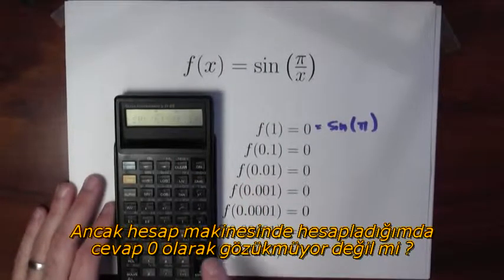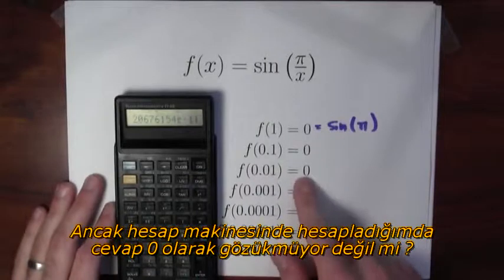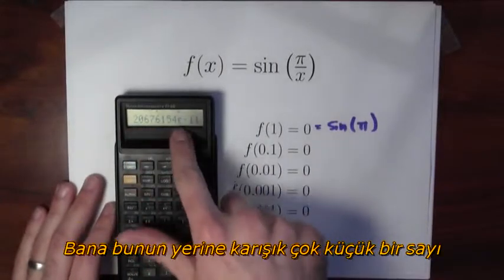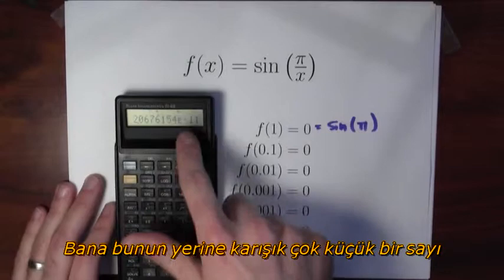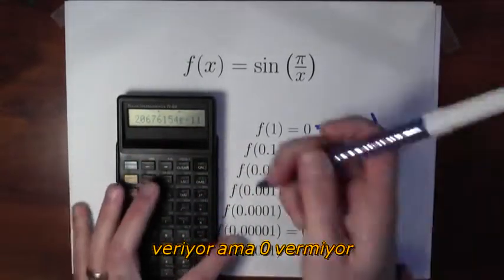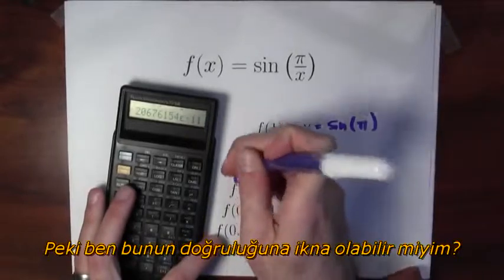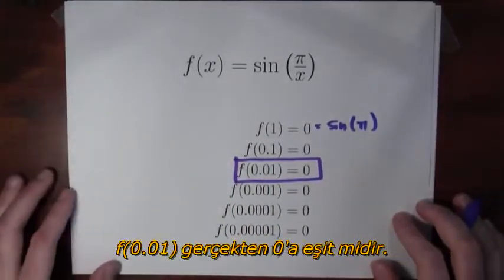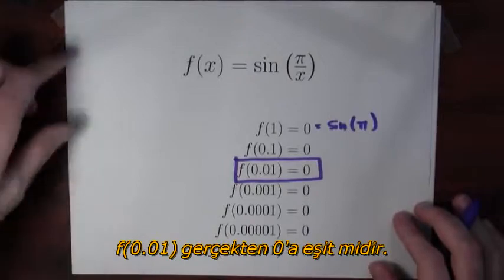If I ask my calculator to do this, it is not telling me the answer is 0. The calculator's giving me this, admittedly a very small number, E negative 11 here, but it's still not actually 0. So can I convince you that this is even true, that the function's value at 0.01 actually is equal to 0?